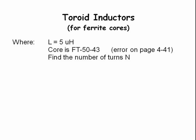Now find the number of turns, given L equals 5 microhenries and the core is an FT50-43. From the table, A sub L equals 523.